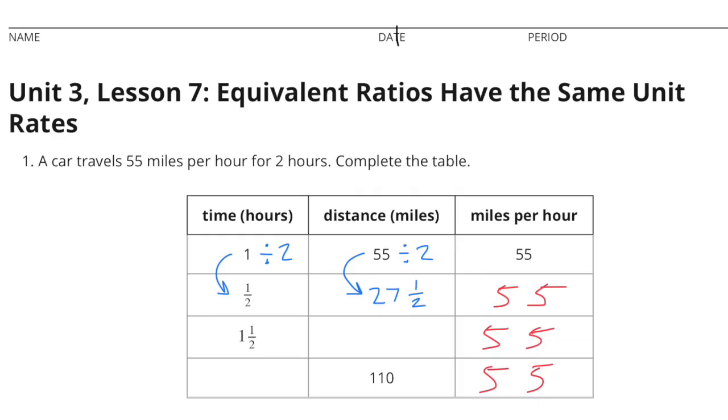On the left-hand side where it says time, 1.5 hour, you just divide the 1 by 2 to get 1.5. Therefore, you'll have to divide the distance by 2. So 55 divided by 2 equals 27.5. So for every half hour, the distance covered is 27.5 miles at 55 miles per hour.